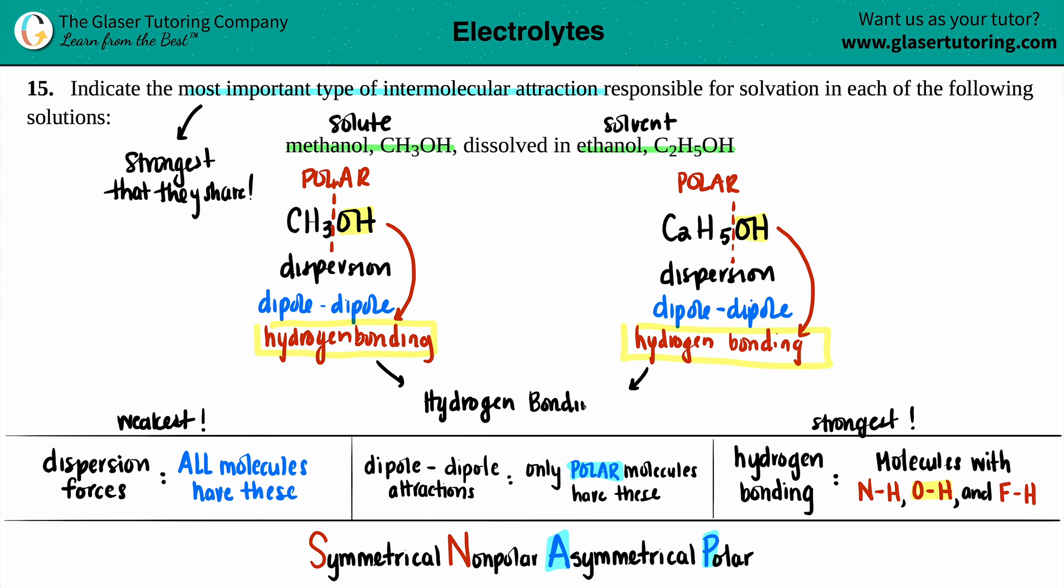But let's just say that one of them had hydrogen bonding and the other one didn't. You cannot say hydrogen bonding. The next best thing would be, okay, maybe if they both had dipole-dipole, then that would be the answer. So just watch out on that. So hydrogen bonding it is for this one because they both have it.